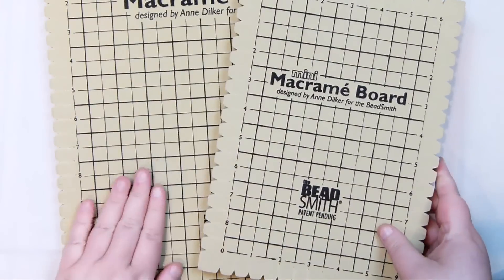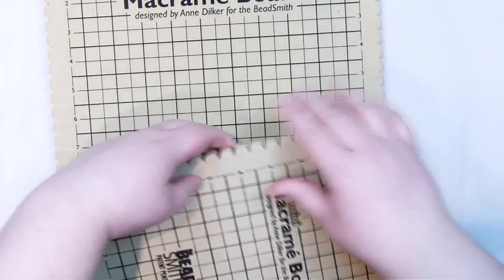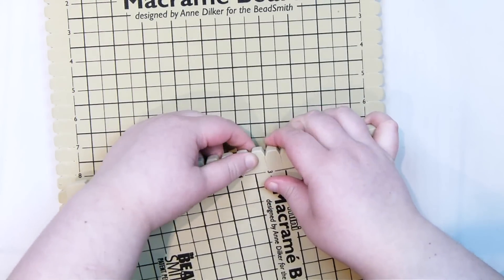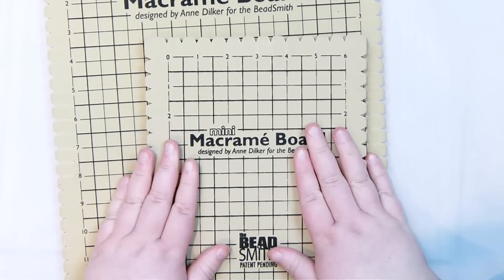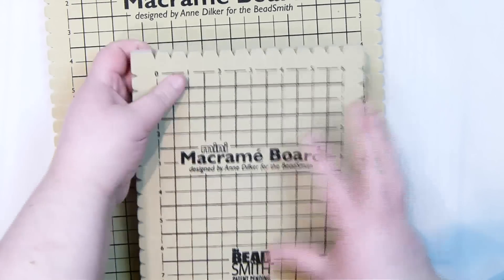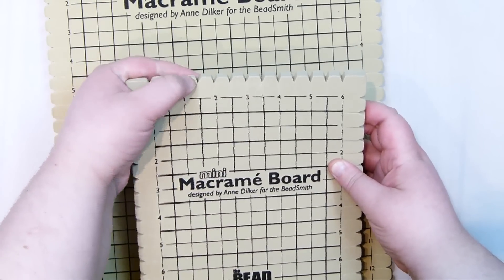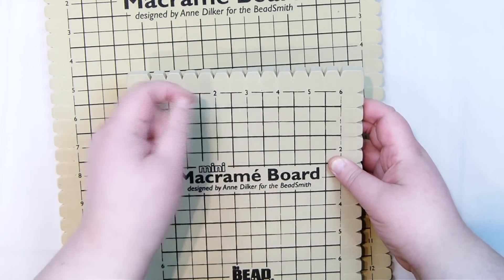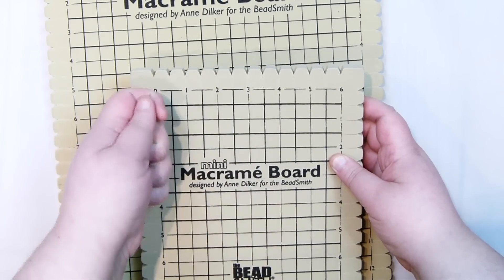What these are, they're made of foam and you have these little ridges on the side that make it really handy and easy to work with macrame because you just use these little slots to fasten your cord, but then easily you can take it out again and refasten it if you need to.